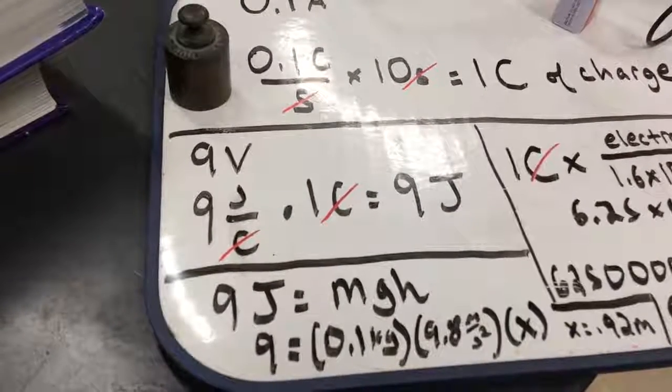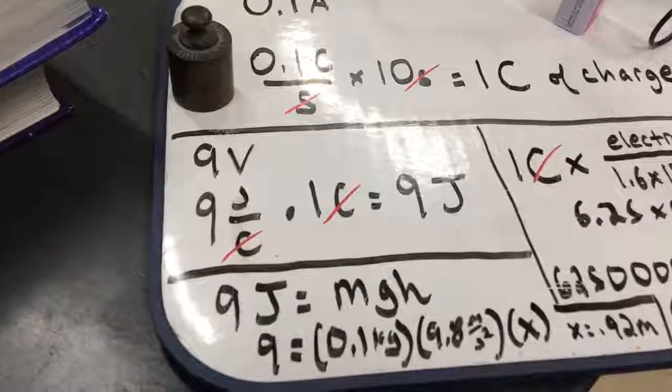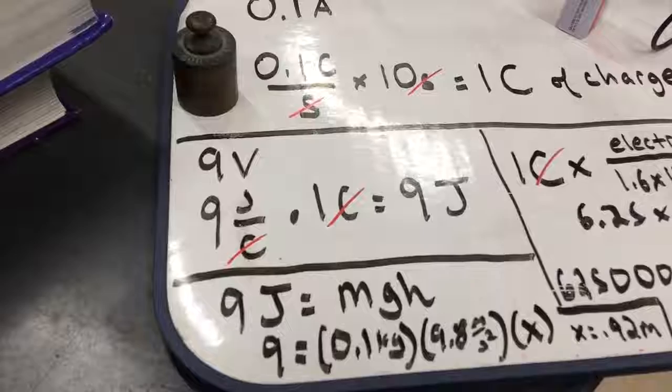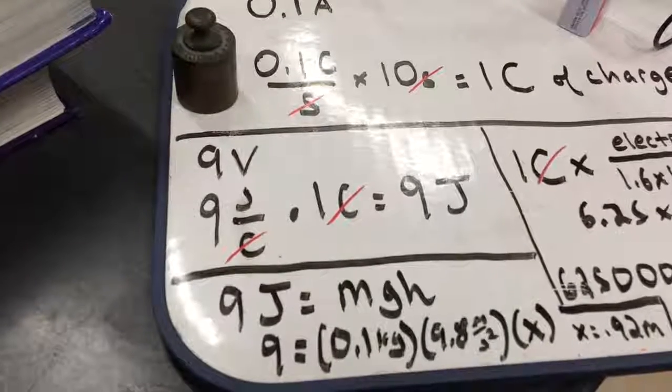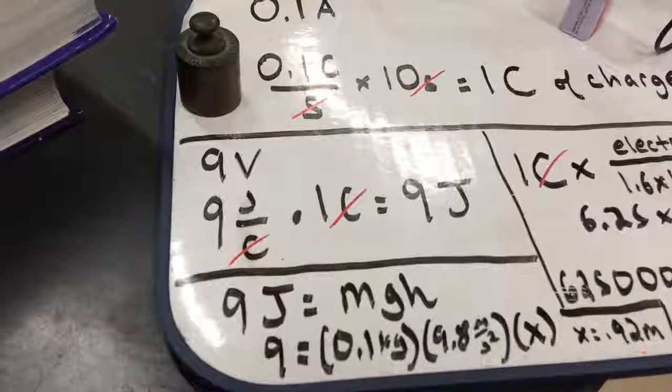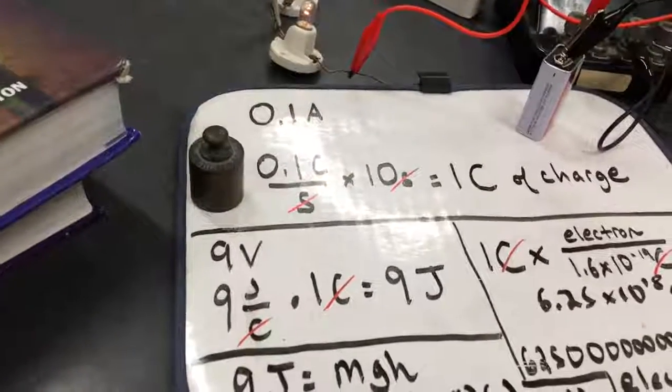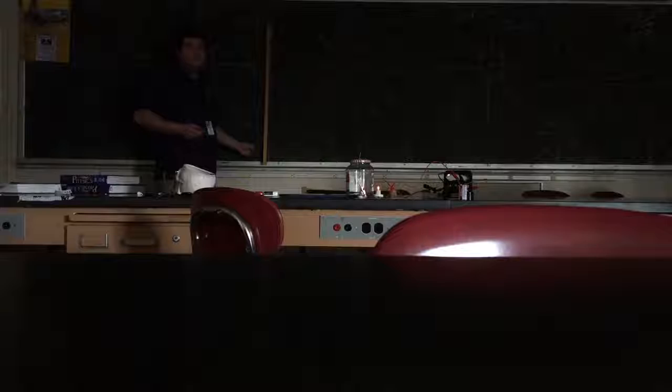So I'm going to do the work on this mass required to light the bulb for those 10 seconds. And I'll take 10 seconds to do it. So I'll be outputting power at the same rate that our little battery here was.